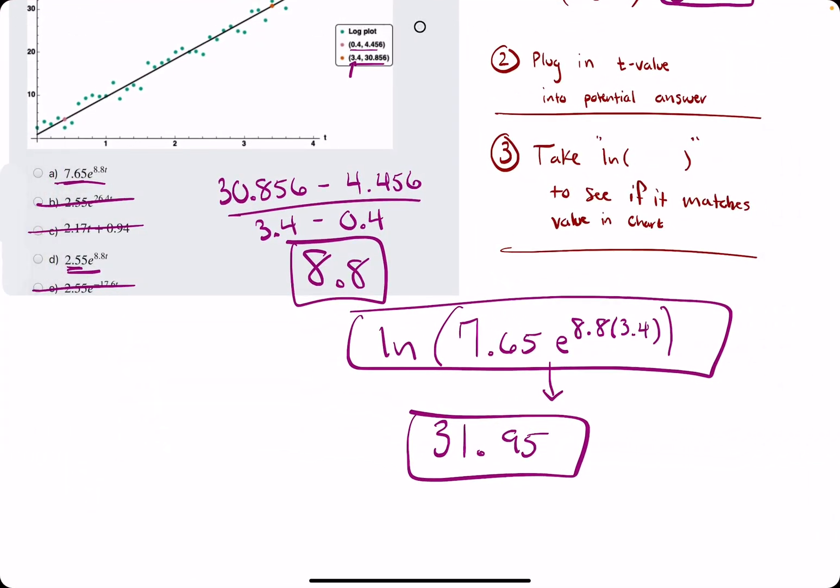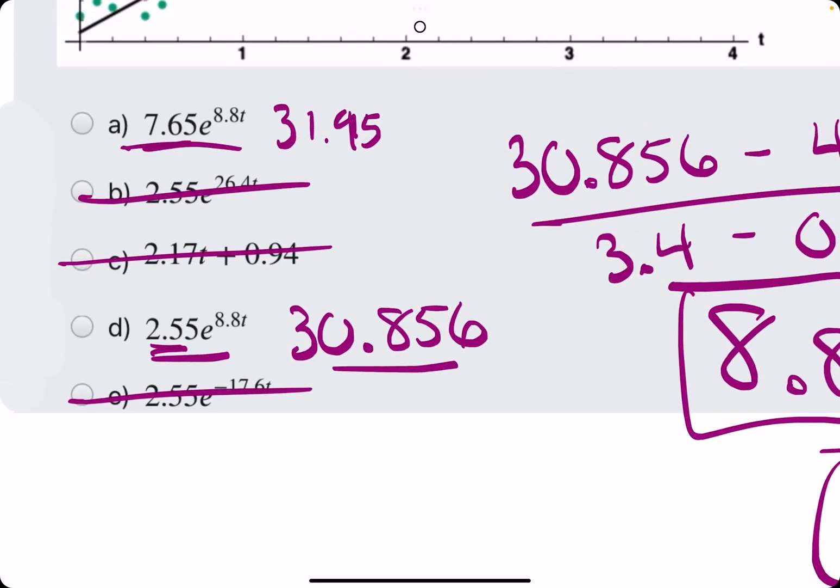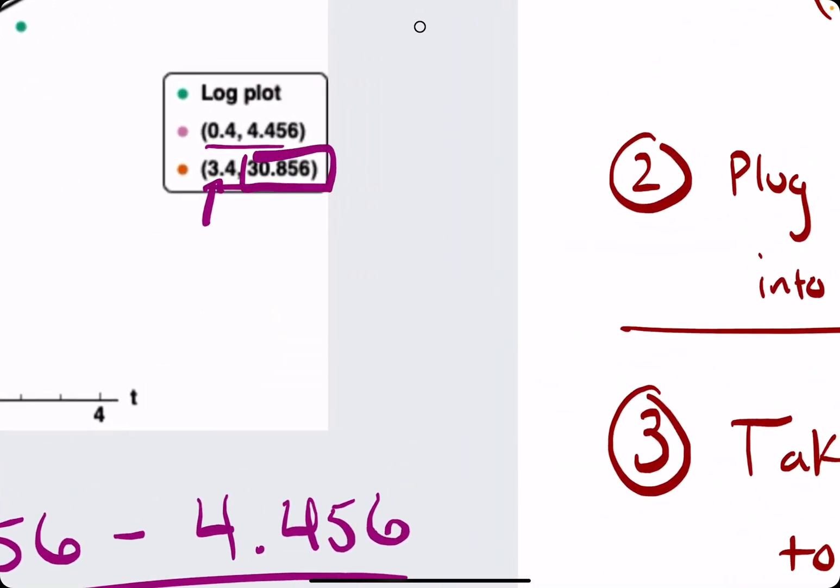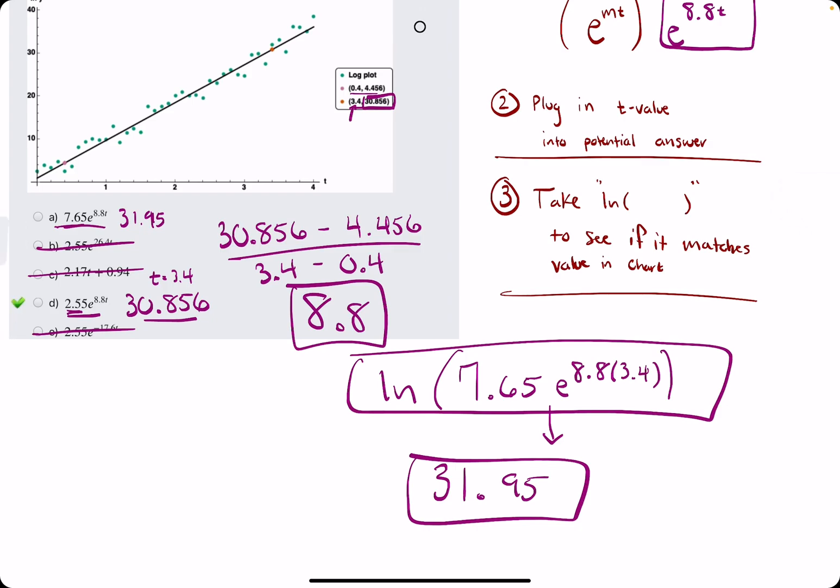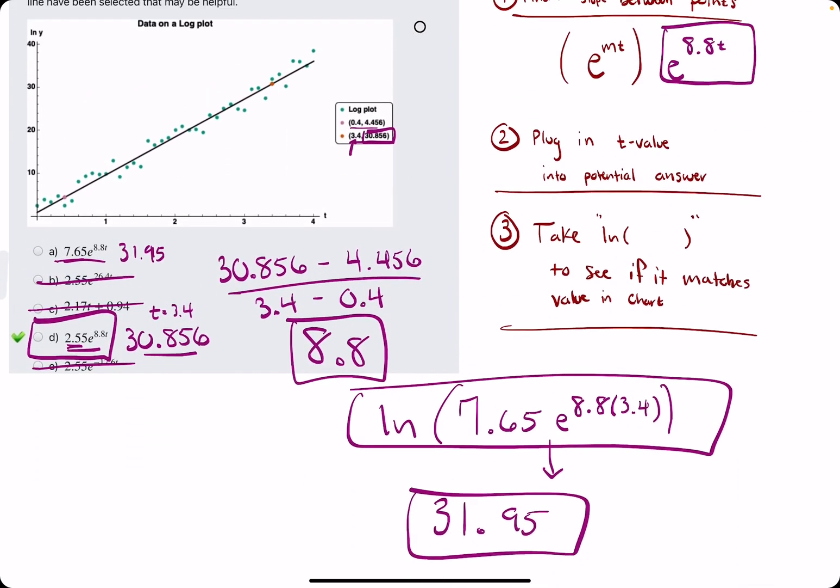So this option A, when we went this route, gave us 31.95. And then when we tried option D, it actually gave us the exact value we were looking for because we plugged in T equals 3.4, and it gave us the exact corresponding Y value, 30.856, so we break out the eraser, and we see that D is, in fact, our answer.